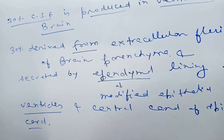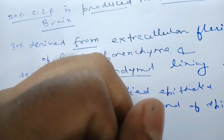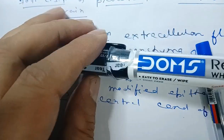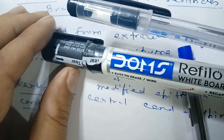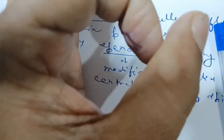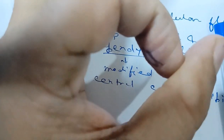The spinal cord is situated inside the vertebral column, which is formed by different vertebrae stacked on top of each other. In between two vertebrae there is an intervertebral disc. Each vertebra has a vertebral canal, and inside this vertebral canal the spinal cord is present.